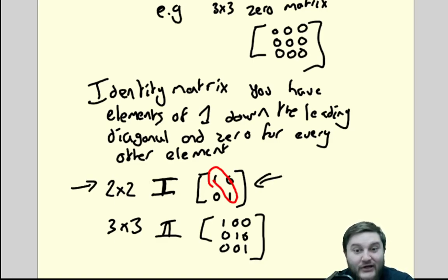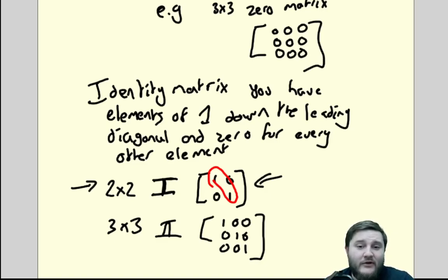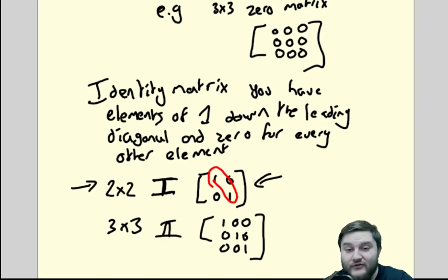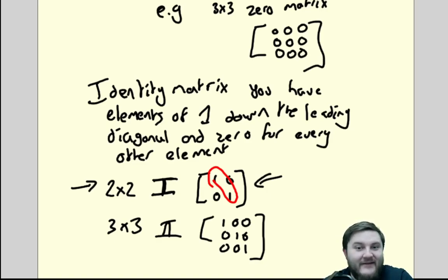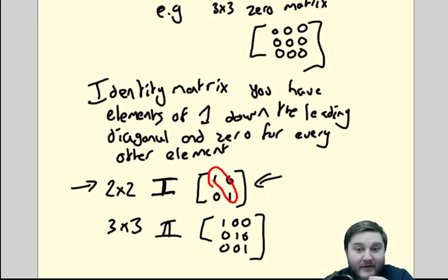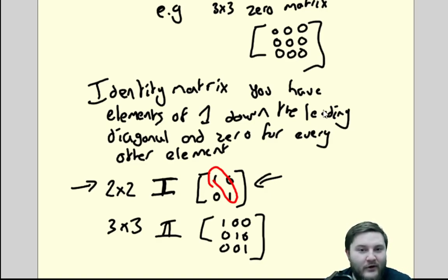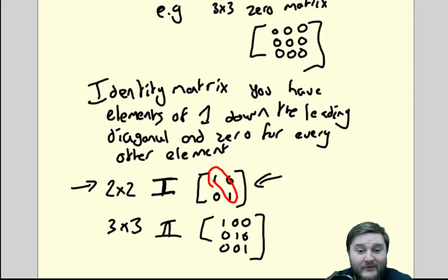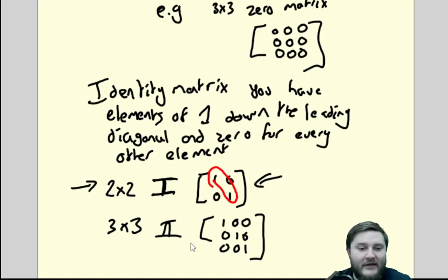The identity matrix is a very useful matrix, and we'll talk more about it when we cover operations and transformations, because the identity matrix has a very specific and unique transformation. It's absolutely something we need to know — I would flashcard that up so we don't forget it.